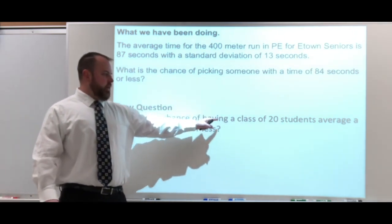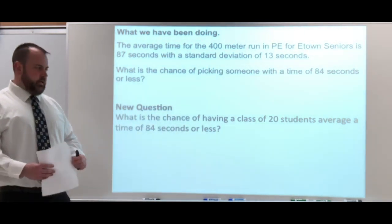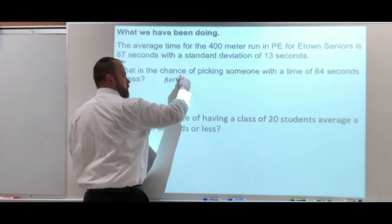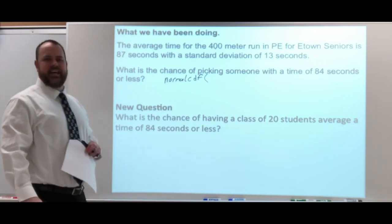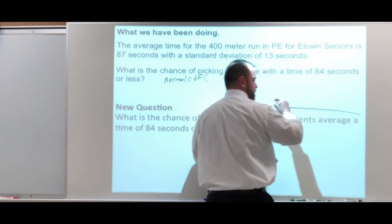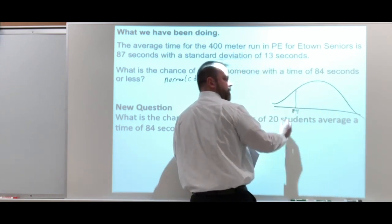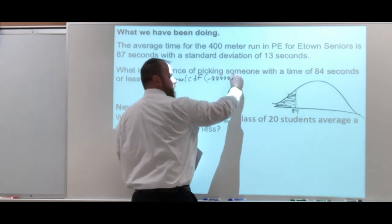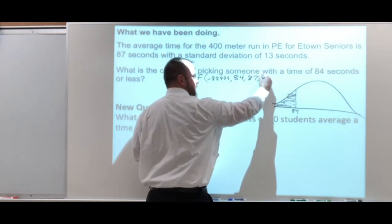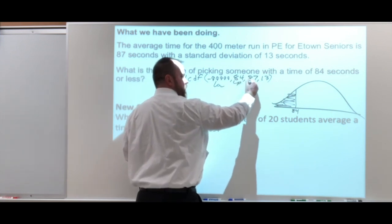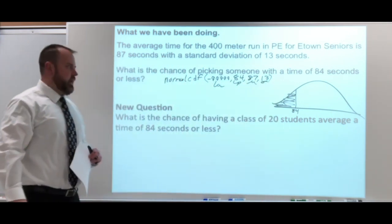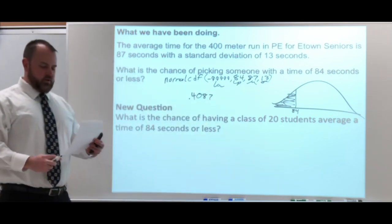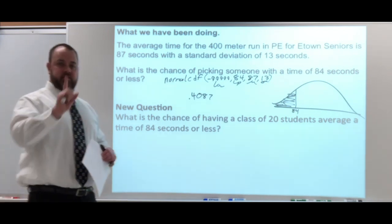And the new question: what's the chance of having a class of 20 students average a time of 84 seconds or less? For the first part, I'm just going to use my normal CDF function. We're looking at less than 84 seconds, so 84 is our upper bound — I'll pick an obnoxiously small lower bound. Lower bound, upper bound of 84, mu of 87, and sigma of 13. The answer works out to about 0.4087. So that is the probability of getting 84 seconds or less if you're selecting just one person.